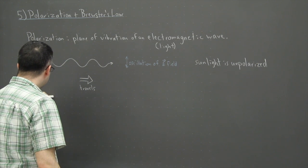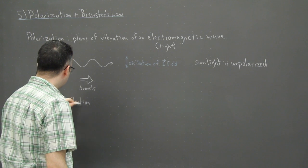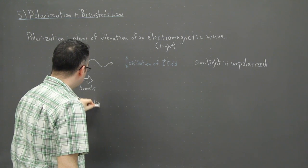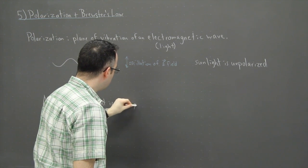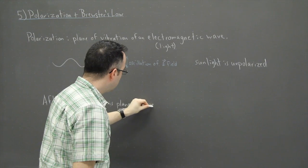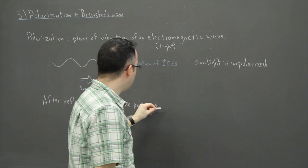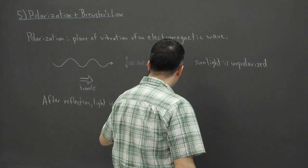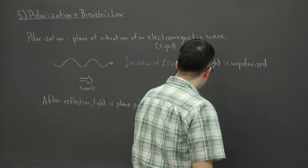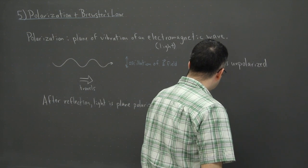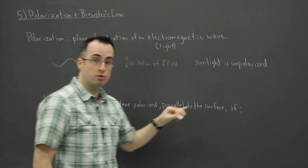But it is possible to have light actually be polarized. So we'll say this, so after reflection. So if light actually bounces off something, the light is plane polarized, in other words, in a nice, all up and down or left and right or something like that, light is plane polarized parallel to the surface, it turns out, if the following happens. This is actually what's known as Brewster's Law, this situation here.